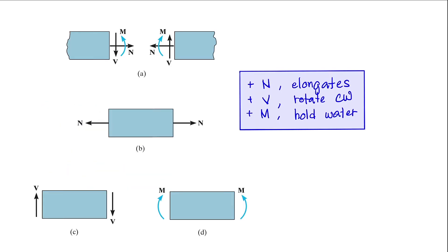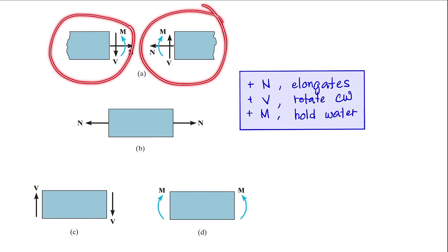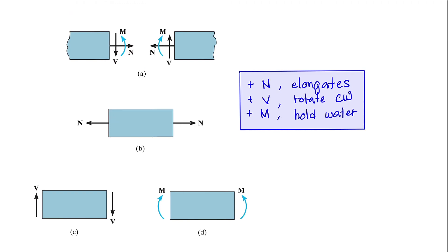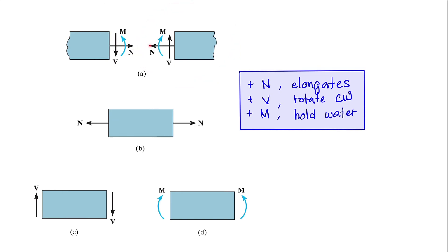For our sign conventions, to establish the positive directions for our internal forces: when you cut our structure, we have standard directions for the left portion and the right portion. For the left portion, your normal force is always acting outwards, your shear must be acting downwards, and the moment is rotating in a counterclockwise direction. On the right portion, it will be the opposite direction — your normal force acting outwards towards the left, your shear acting upwards, and your moment acting in a clockwise direction.